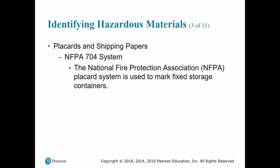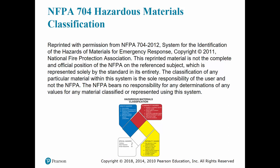The NFPA 704 system identifies potential danger using background colors and numbers ranging from zero to four. The blue diamond indicates health hazard, the red indicates fire hazard, the yellow indicates reactivity hazard, and the white diamond is used for symbols indicating additional information such as radioactivity, oxidation, and need for protective equipment. So blue is your health hazard, red is flammability, yellow is instability, and white indicates any special hazards.